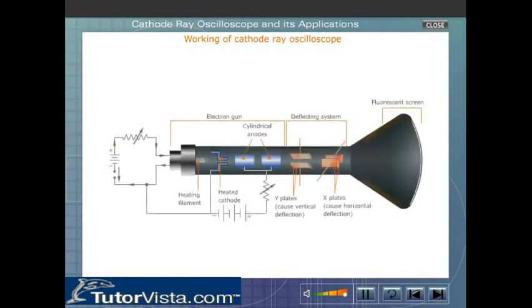Working of the cathode ray oscilloscope: The electron gun generates a narrow beam of electrons which the anodes accelerate. Deflecting coils produce an extremely low frequency electromagnetic field that changes the direction of the electron beam. The electron beam produces a tiny bright visible spot when it strikes the screen. To produce an image, signals are applied to the deflecting coils and to the apparatus controlling the beam intensity.